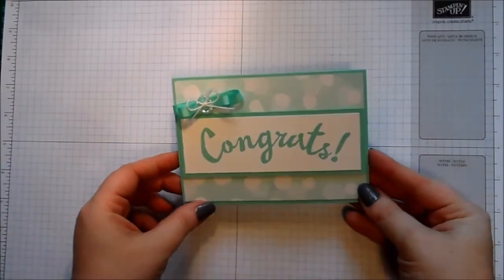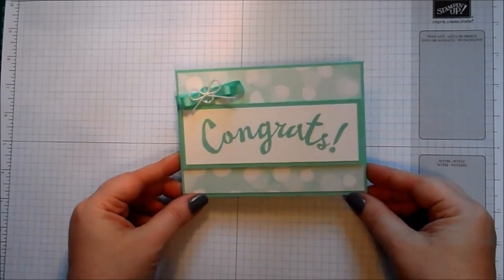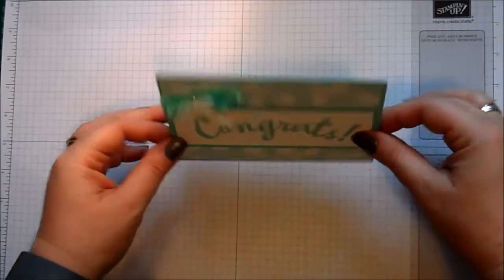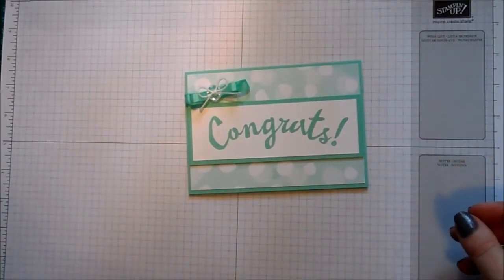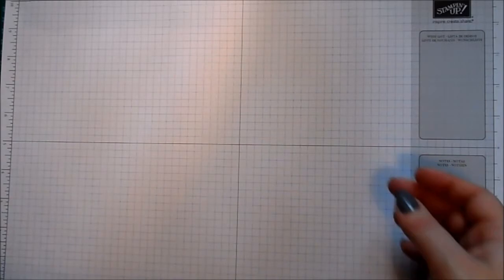This one's been made using Coastal Cabana which is retiring, so the one I'm going to make today is going to be in Daffodil Delight. So here goes. First of all you're going to need a standard card base, which is basically a piece of A4 cut in half and folded in half.